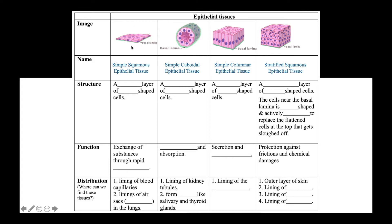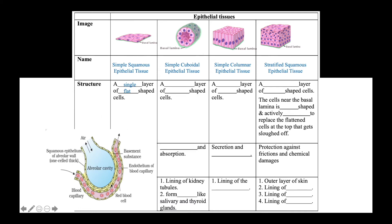Simple squamous epithelial tissue is made up of a single layer of flat-shaped cells. Because of this, it is perfect for the exchange of substances through rapid diffusion. It can be commonly found lining blood capillaries and air sacs called alveoli in the lungs. The lining of the alveolus and the blood capillary covering it are both made of a single layer of flat cells to reduce resistance for the exchange of respiratory gases.